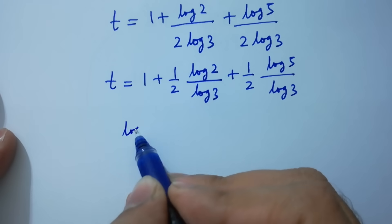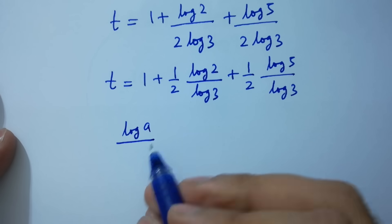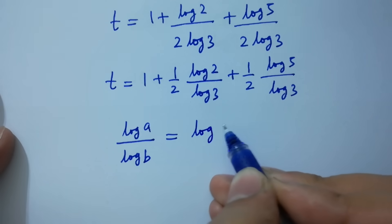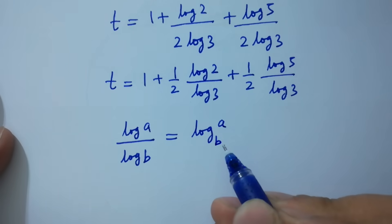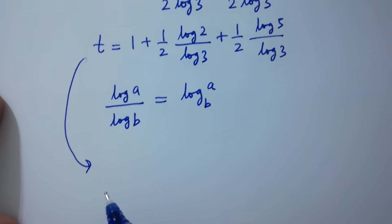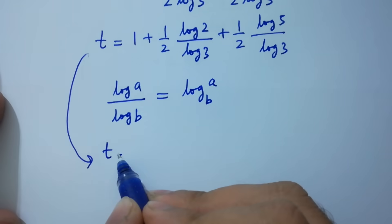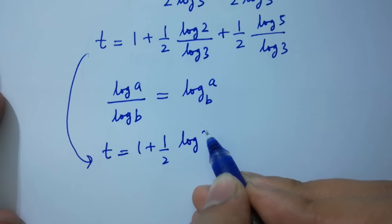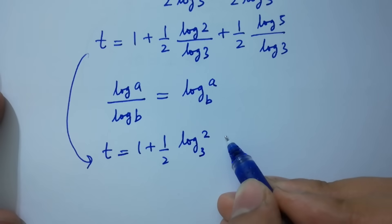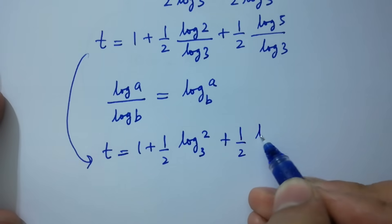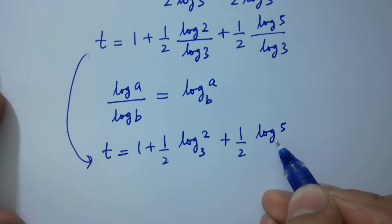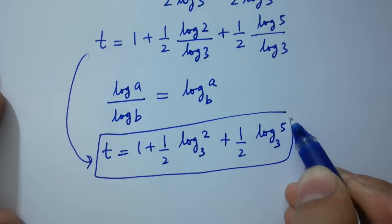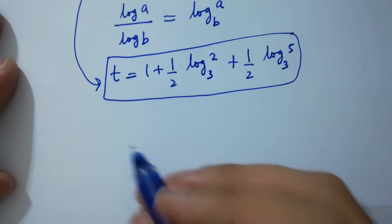As we know, log a over log b equals log a to the base b. So t equals 1 plus half log 2 to the base 3 plus half log 5 to the base 3. This is the value of t. Now I am going to verify.